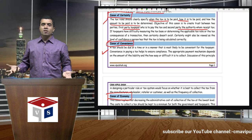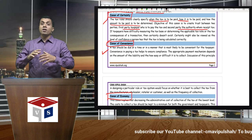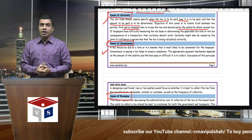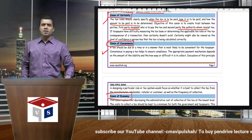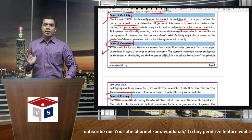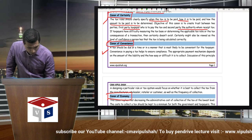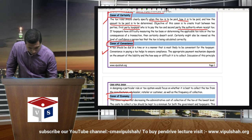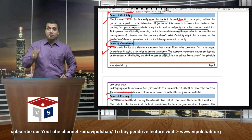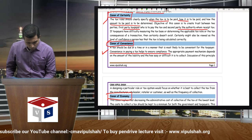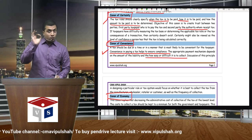You know everything is now online — GST, direct tax — payment is done online. The reason is that people are also ready to pay because the system is quite easy. A tax should be due at a time or in a manner that is most likely to be convenient for the taxpayer. Convenience in paying tax helps ensure tax compliance. The appropriate payment mechanism depends on the amount of liability and how easy or difficult it is to collect.